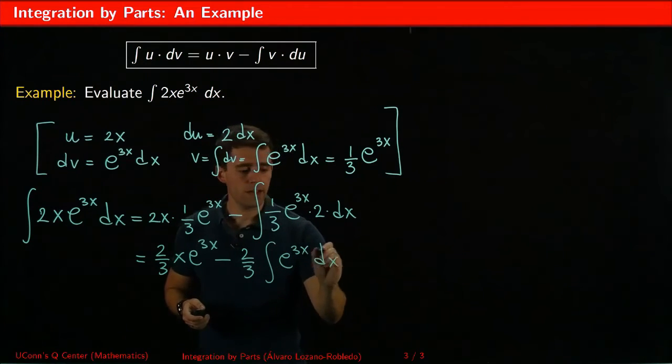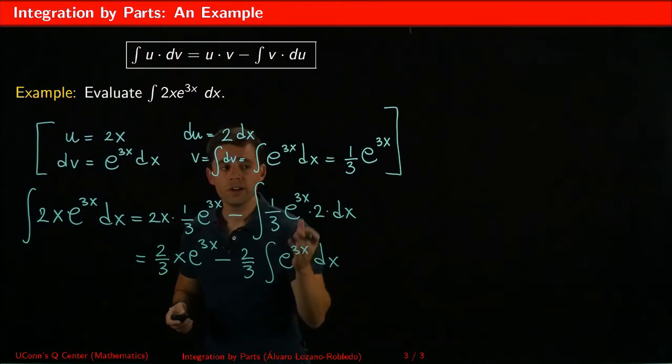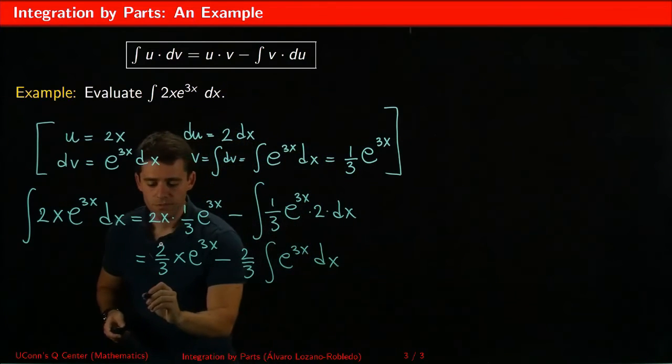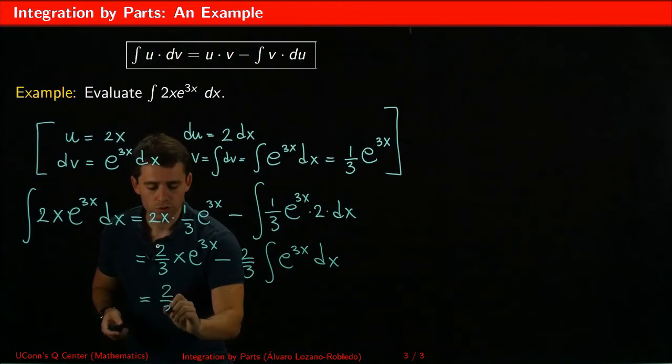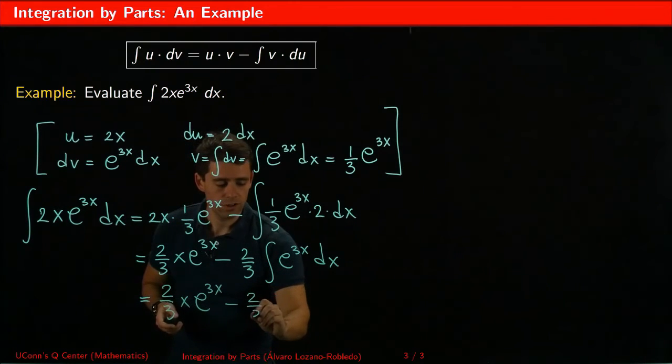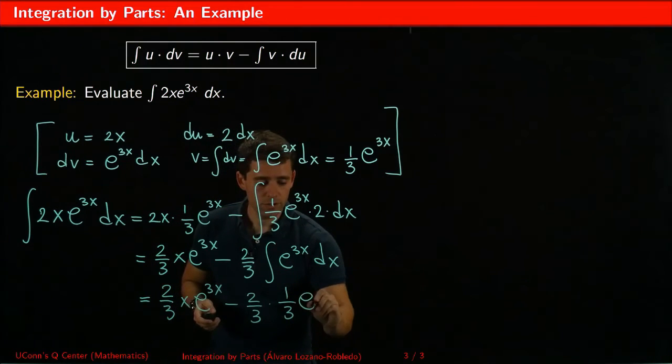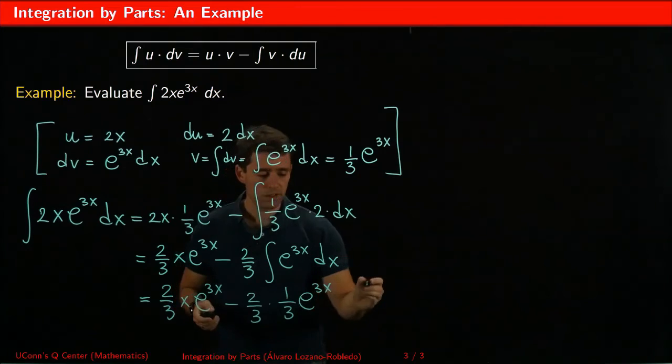And now I see that my choices were good because this is an integral that I can do. I've done it already before, so this answer will be 2 thirds of x e to the 3x minus 2 thirds times, the integral here is a third of e to the 3x plus constants.